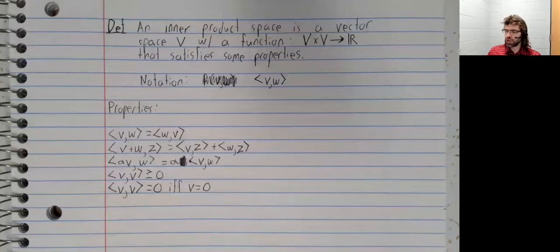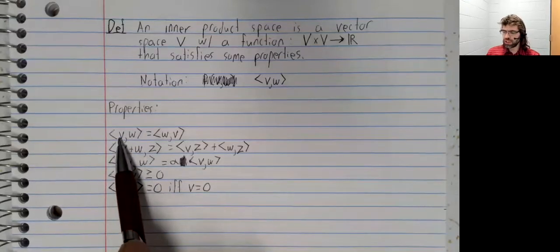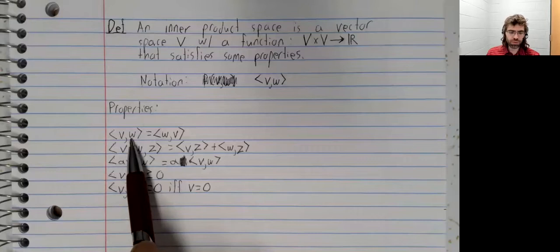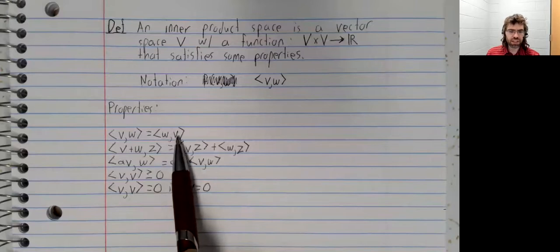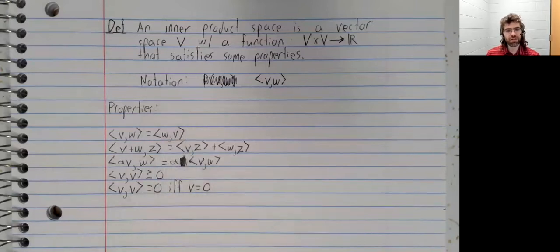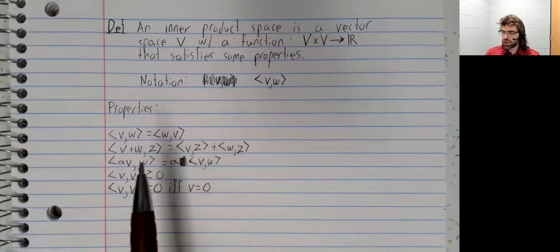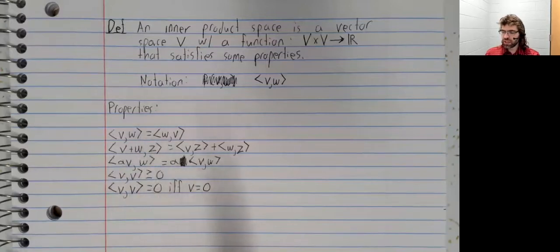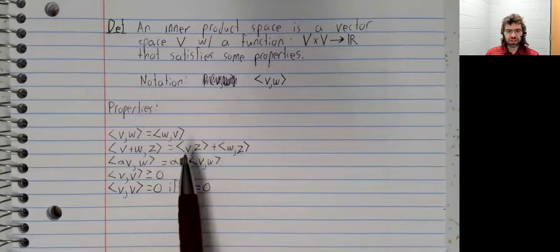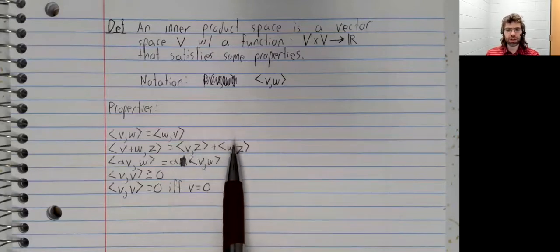The inner product of a vector V with a vector W equals the inner product of W with V. That is, this is commutative. The inner product of V plus W with Z is the inner product of V and Z plus the inner product of W and Z.